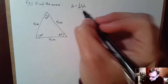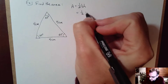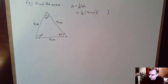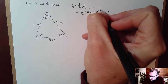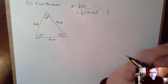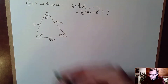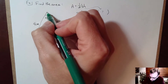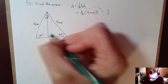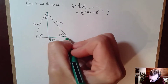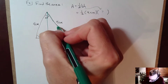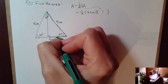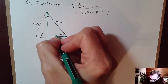I already know the base, so this is equal to 1 half times 4 centimeters, but I don't know what the height is. I need to figure out the height of this triangle. To do that, I'm going to look at the peak and drop an altitude. When I construct an altitude, this will be a right angle, and the base of that right triangle is actually 2 centimeters.